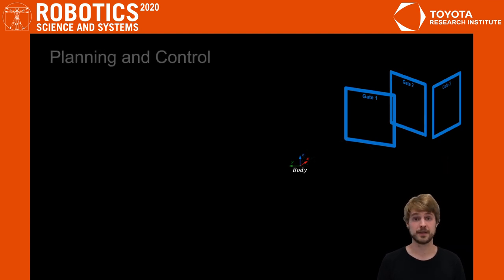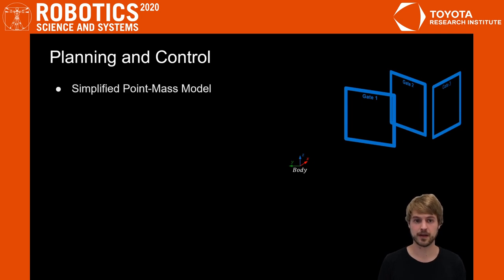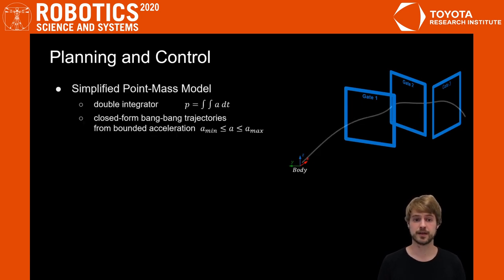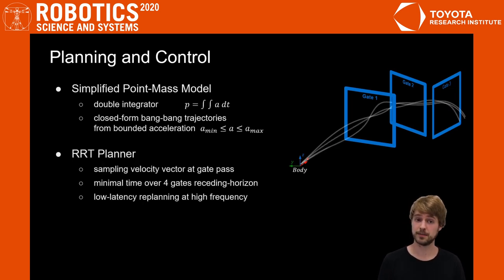For planning, we deploy a simplified point-mass model. This is a double integrator for which we can compute closed-form bang-bang trajectories from bounded accelerations. In an RRT planner, we then sample this over velocity vectors at gate pass and retrieve the minimum time trajectories over a receding horizon of four gates.